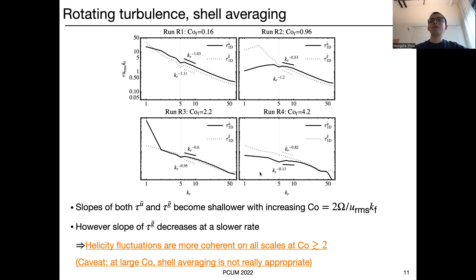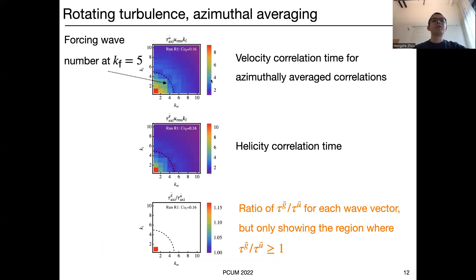At the largest rotation rate, the helicity correlation time becomes larger than the velocity correlation time — so increasing the rotation rate increases the scale separation between helicity and velocity fluctuations. One caveat is that at large Coriolis number, shell averaging is not appropriate because the turbulence becomes axisymmetric rather than spherically symmetric. So the next step is to do an azimuthal average in Fourier space. For one run, the first panel shows the correlation time of velocity fluctuations as a function of radial wavenumber and vertical wavenumber, with the forcing wavenumber shown as a dashed curve.